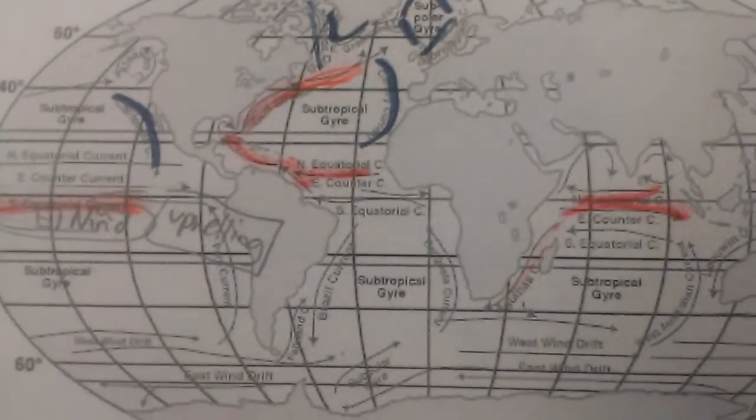So if I'm looking at this, I also see that there's red and blue currents. Red currents indicate warm currents coming from the equator. Let's look a little closer.